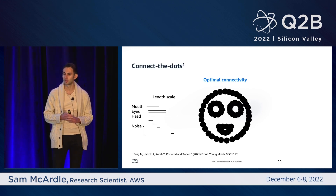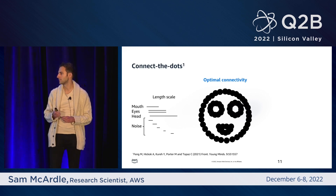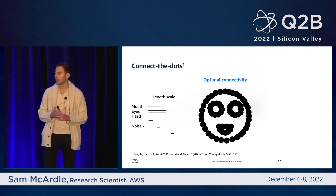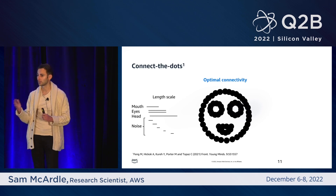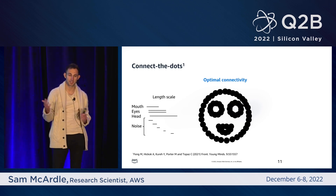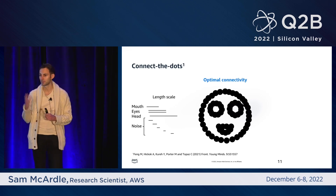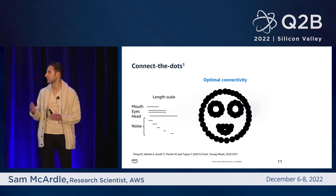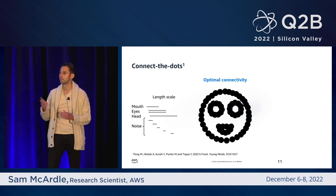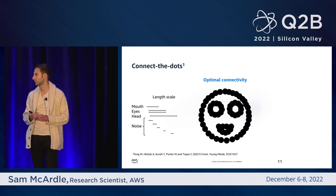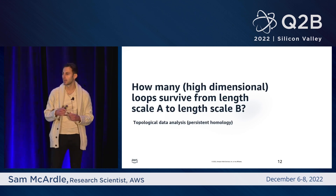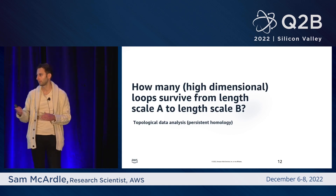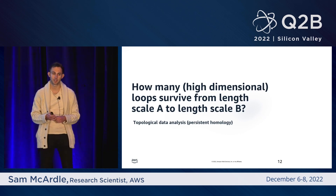It's these persistence barcodes that we're trying to extract from topological data analysis. They allow us to read off what the dominant topological features are. I could look at a diagram and say it basically consists of four loops, and then compare this persistence barcode to that taken from other data sets. The underlying mathematical task is to ask how many potentially high-dimensional loops survive from a short length scale A to a longer length scale B. This is known within topological data analysis as persistent homology.